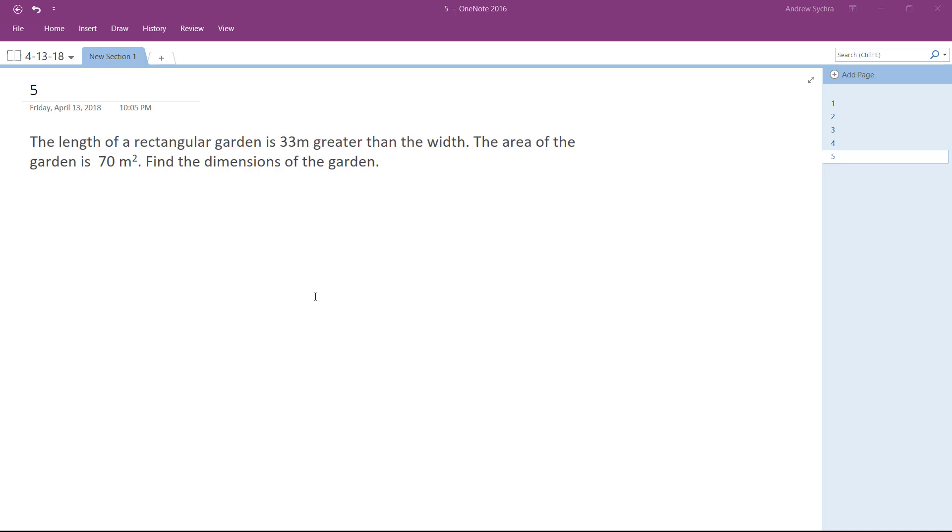The length of the rectangular garden is 33 meters greater than its width. So I don't know what its width is, so we'll just do x, so we'll do x plus 33.